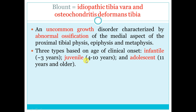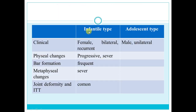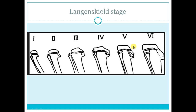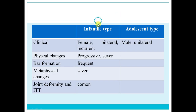Blount disease is one of the uncommon gross disorders with abnormal endochondral ossification in the medial part of the proximal tibial epiphysis, physis, and metaphysis. There are three types: infantile (around 3 years), adolescent (around 10 years), and juvenile in between. The main difference is that adolescent Blount is mild in everything — mild physeal changes, mild severity. Infantile is severe, more common in females, bilateral, with higher incidence of recurrence.